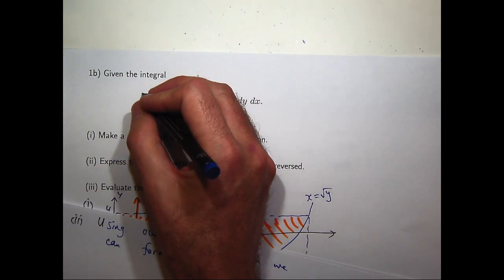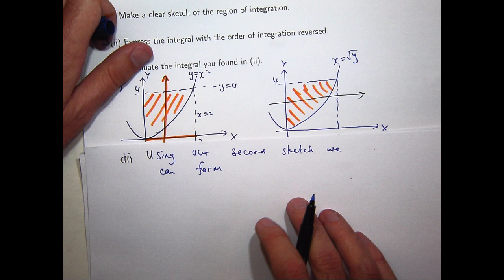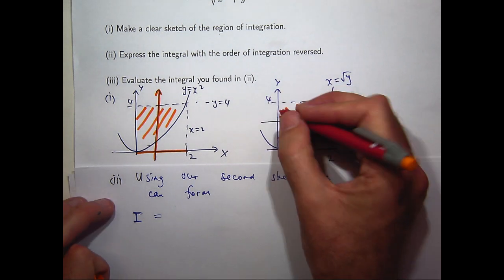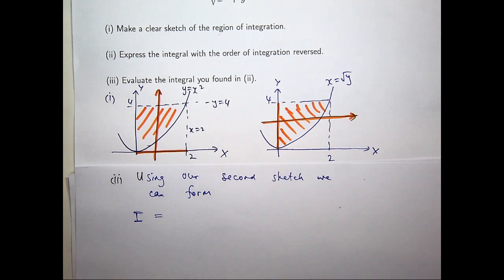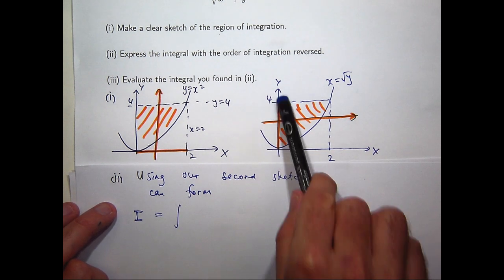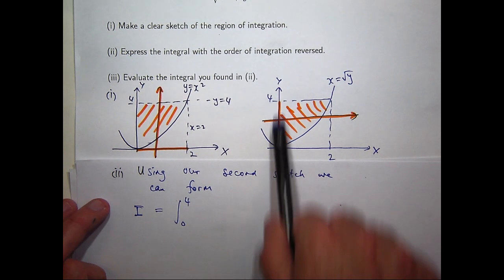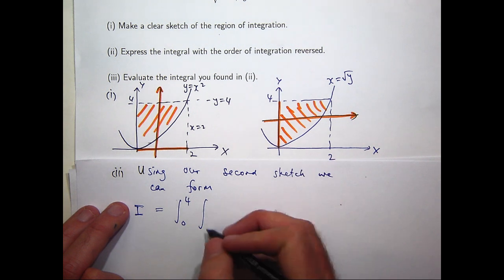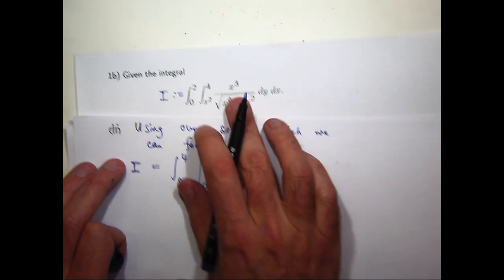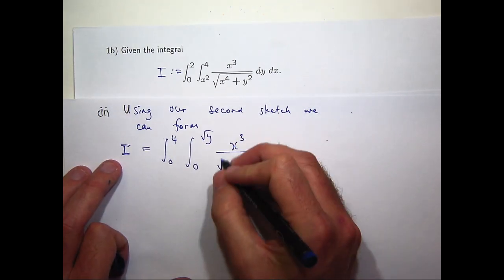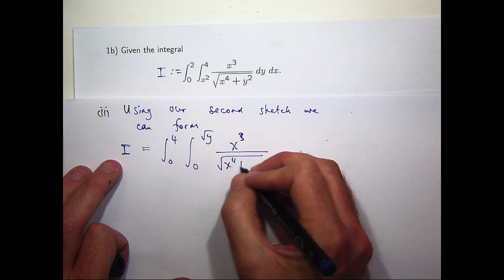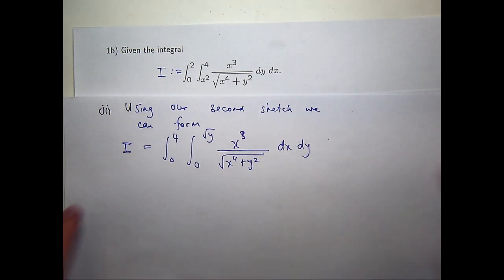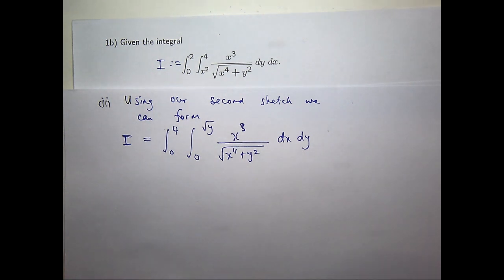Let's call this integral i. OK, so the y limits of integration are between 0 and 4, and the x limits of integration are 0 and root y. Now the function's still the same. But we just reverse the order of integration now. OK, so now we're faced with an integration.